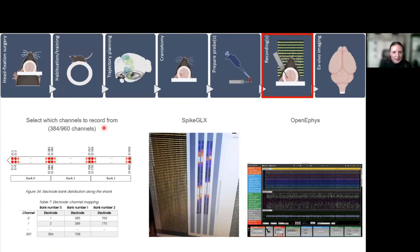I will skip this because I'm already running late, but it has been discussed—you have to select which channels you want to record from. This is a view of Spike GLX, what it looks like when you record, and this is from Open Ephys.